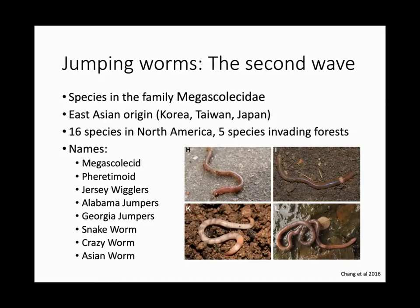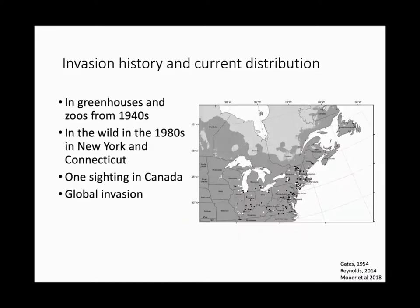There are 16 species of jumping worms known in North America, and five moving into forests. In New York State it's about three co-invading species. You may have heard them by many names: Megascolecid or Amynthas worms, Jersey wigglers, Alabama jumpers, Georgia jumpers, snake worms, crazy worms, or Asian worms. Because of so many names, we're trying to converge on one shared name: jumping worms — which is pretty descriptive of their behavior.